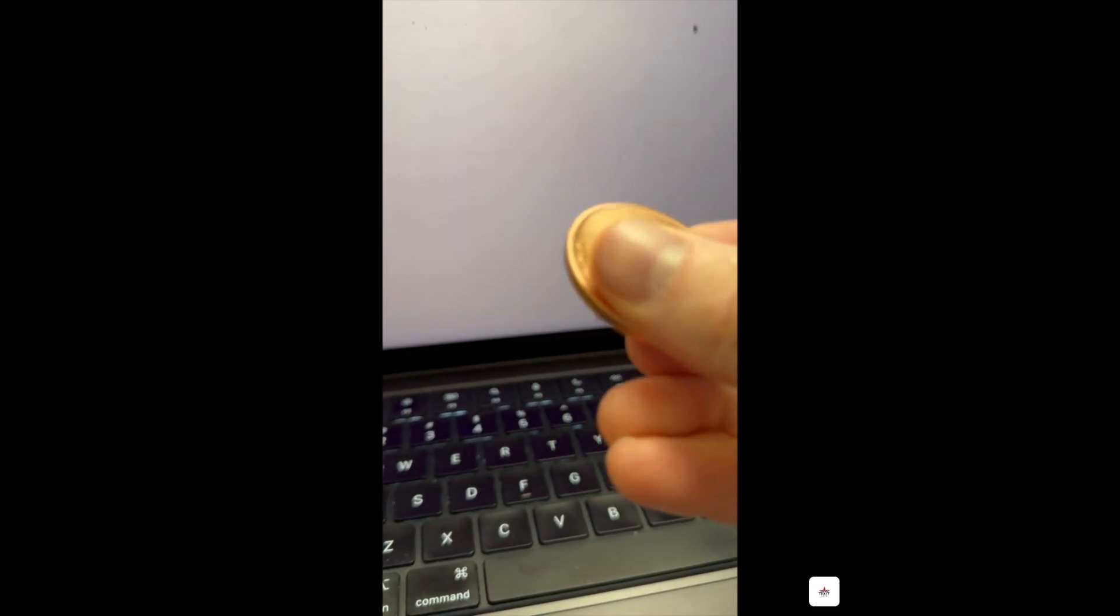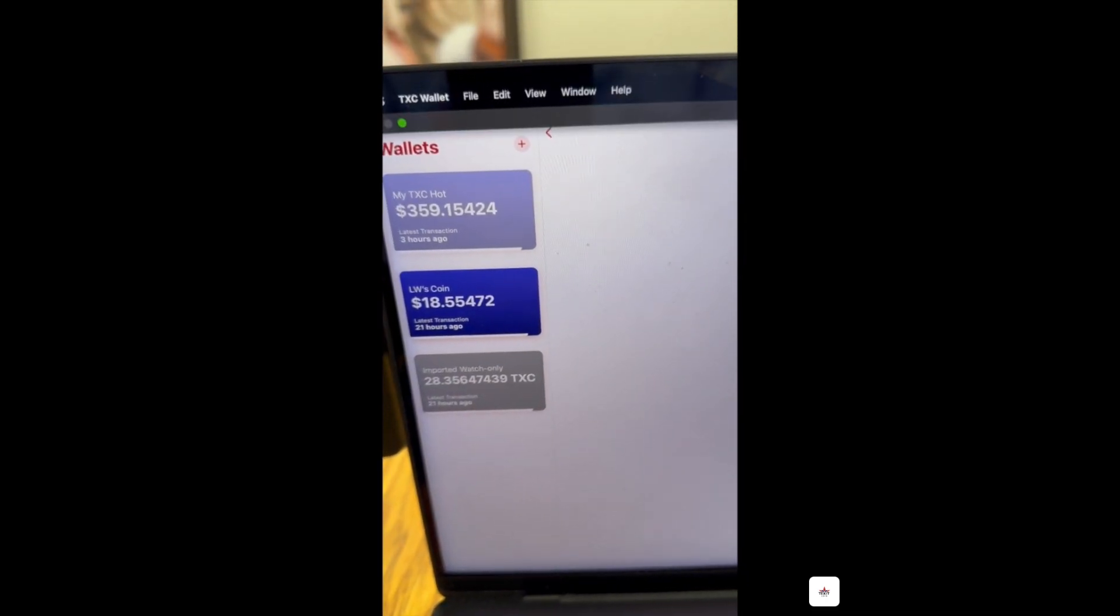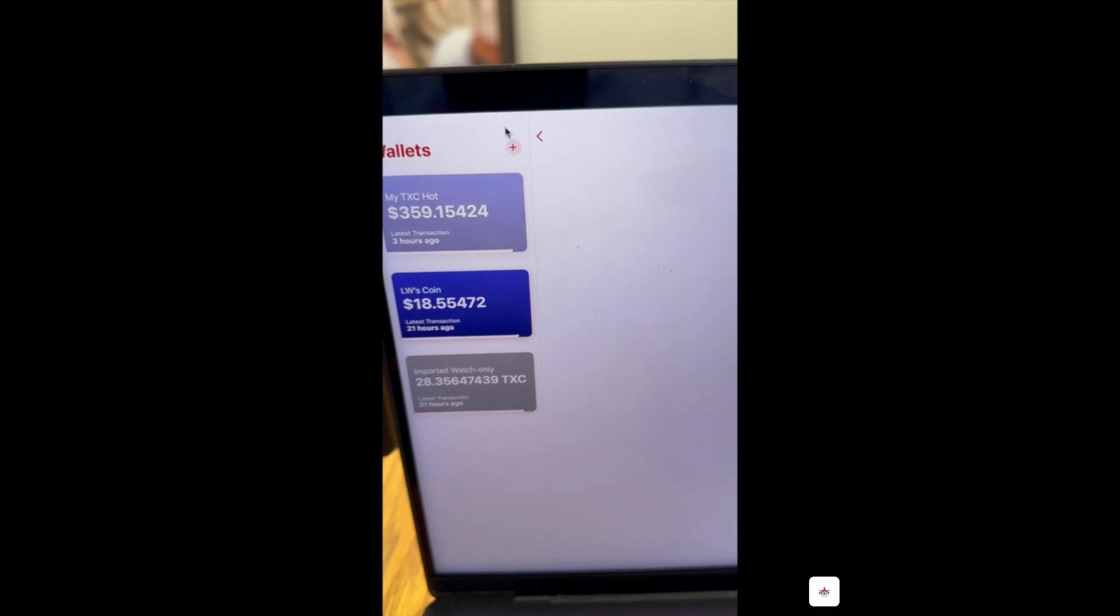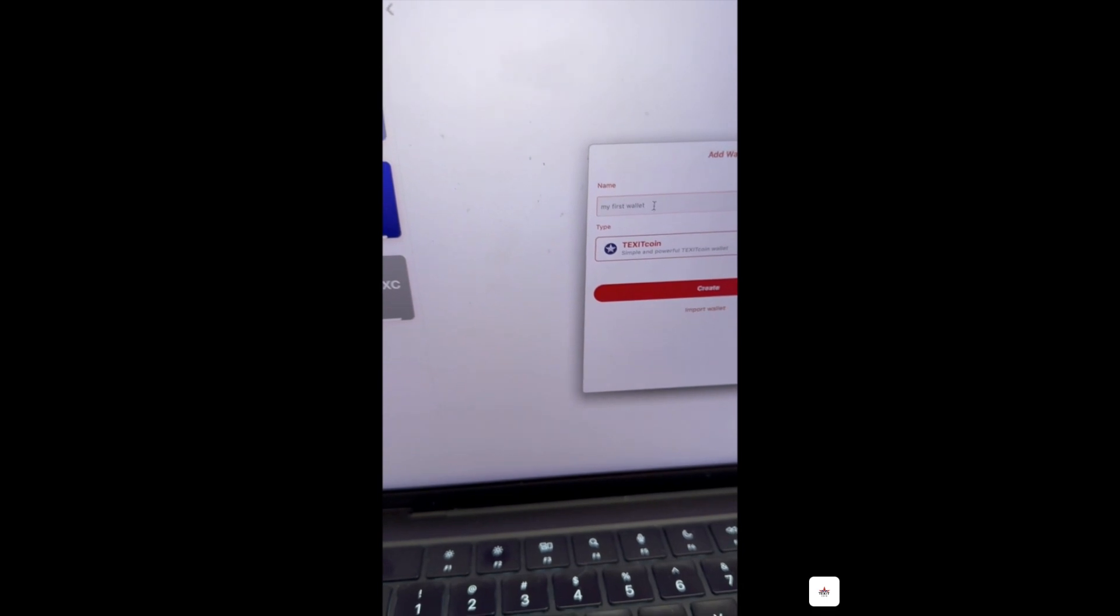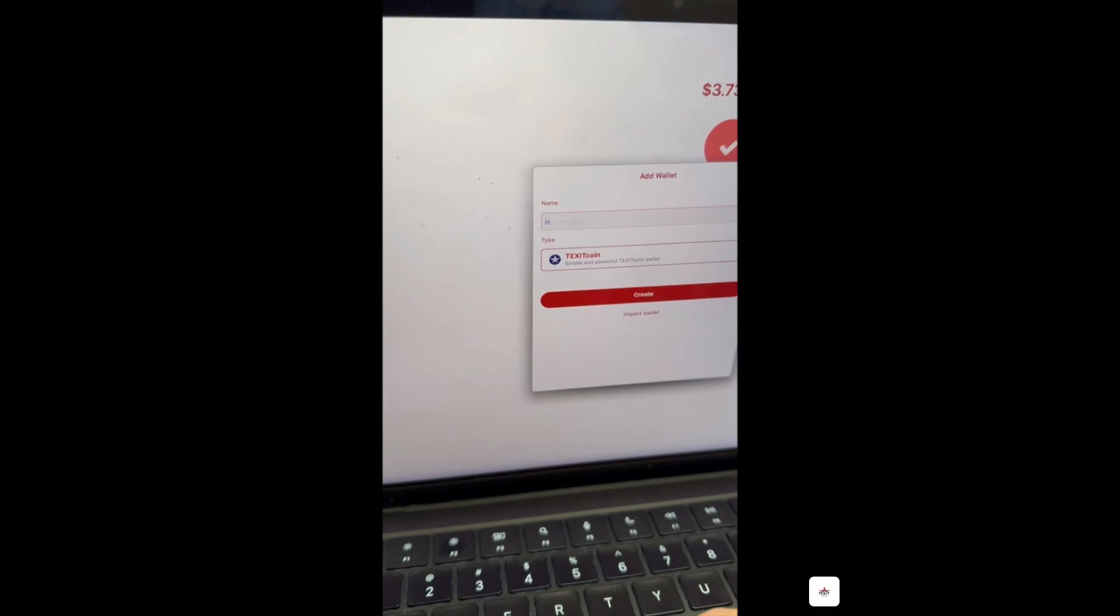With your coin in hand, you are now ready to connect to the TXC wallet. After opening your TXC wallet, you will select the plus sign to the right of the word wallets. This will open a pop-up window where you can give the wallet a name and then select import wallet.